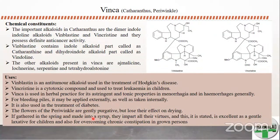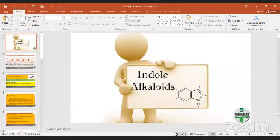Vinca is used in herbal practice for its astringent and tonic properties in case of menorrhagia — excessive loss of blood during menstruation — and in hemorrhages. It may be applied externally as well as internally. Also used in treatment of diabetes. Flowers of periwinkle gathered in spring and made into a syrup act as a gentle laxative for children and for overcoming chronic constipation.